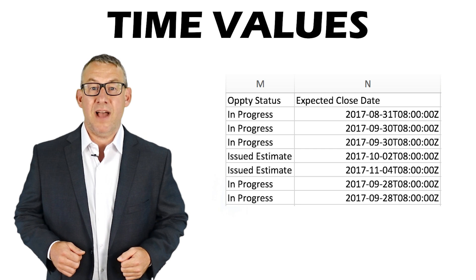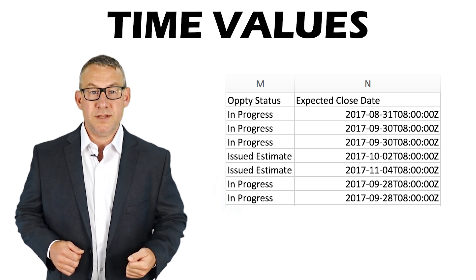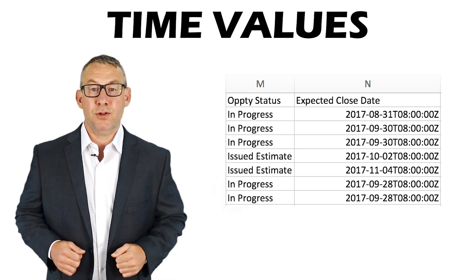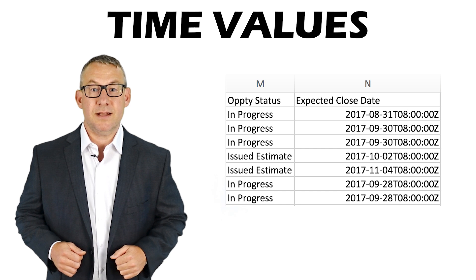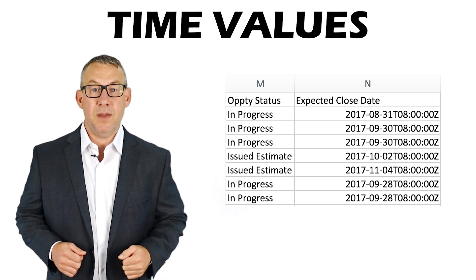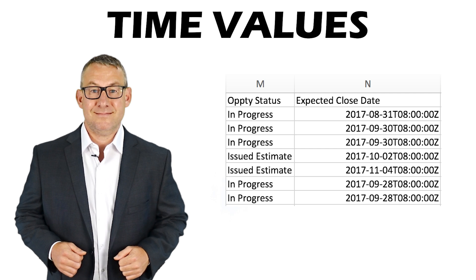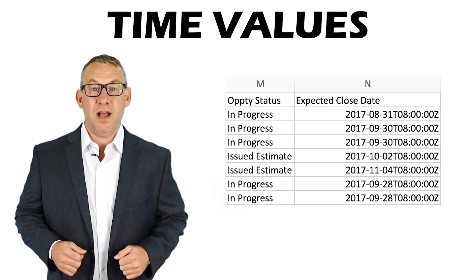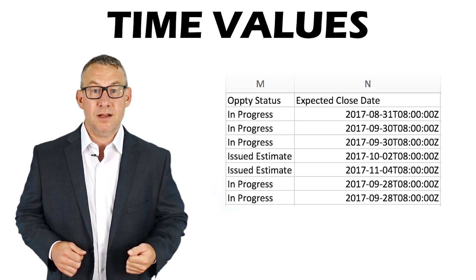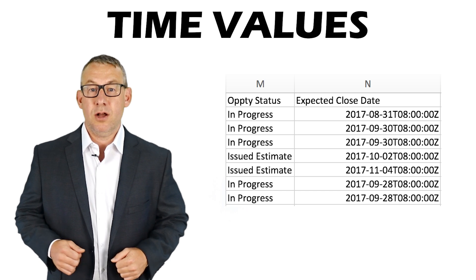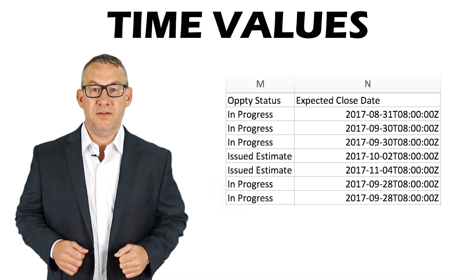Temporal data should include a field that contains the time at which the data was recorded. Time values can be stored in a date, string, or numeric field.